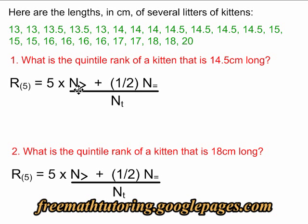N greater than stands for the number of kittens that are greater than 14.5 centimeters long in this case. N equals stands for the number of kittens that are exactly 14.5 centimeters long. And NT means N total. It stands for the total number of kittens, which is 24.